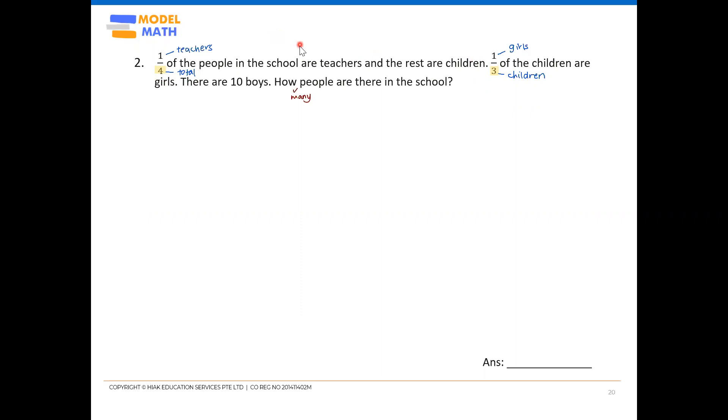So, what we should be doing is we should be drawing a model first. We have to start off with drawing the total four units. So, four units. Out of four units, what we know is that one unit represents teachers. So make sure you label that down.